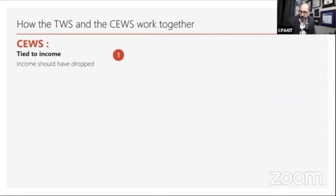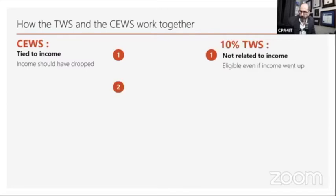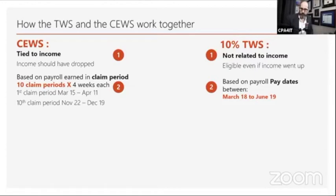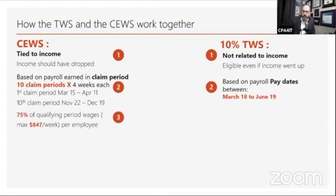In comparing the two programs: CEWS is tied to income — you must prove revenue dropped to certain percentages compared to a prior period. However, the 10% temporary wage subsidy is not related to income; it's universal — every employer who had a payroll account before March 18 is eligible. The CEWS is based on payroll earned within claim periods, while the 10% TWS ended June 19 and was based on payroll pay dates rather than earned dates.